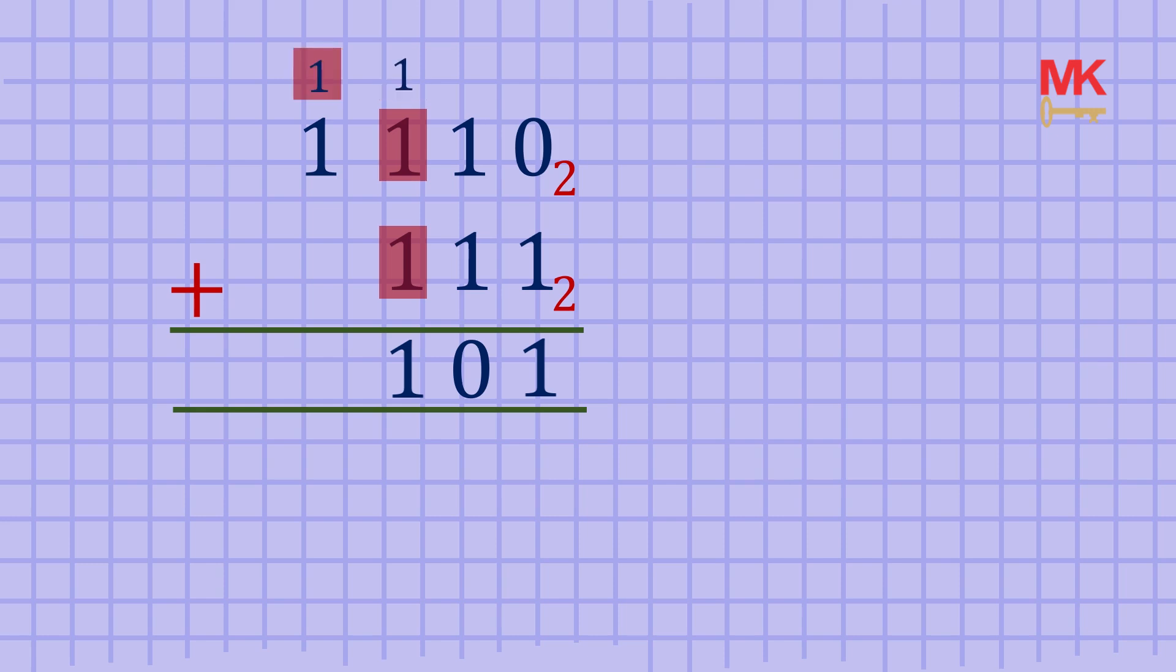Finally, one plus one is two. Divide this sum by the base to get one remainder zero. At this point, we just put down both the remainder and the quotient because there is no further addition.